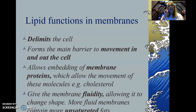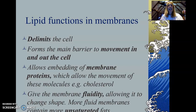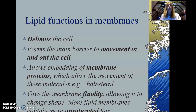In this video, we're going to look at the functions and properties of lipids. The first function is that a membrane, which is made out of lipids, delimits the cell — it separates the cell and its contents from everything else. It also forms a barrier to movement in and out of the cell. We've learned since key stage three that a cell membrane controls the movement of substances in and out of the cell, and it does that with the help of the lipid bilayer.